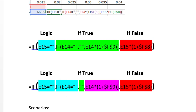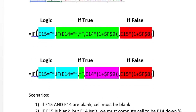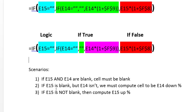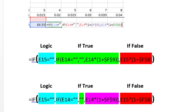So if E15 is blank and E14 is also blank, this cell must equal blank — that's scenario one. This brings us to scenario two: if E15 is blank but E14 is not blank, we are going to compute E14 multiplied by 1 plus F9, where F9 is the percent down the stock goes every period — in this case 10%. Then our third scenario: if E15 is not blank, we compute E15 multiplied by the percent up, which is also 10%.